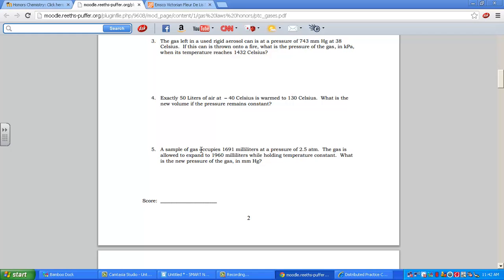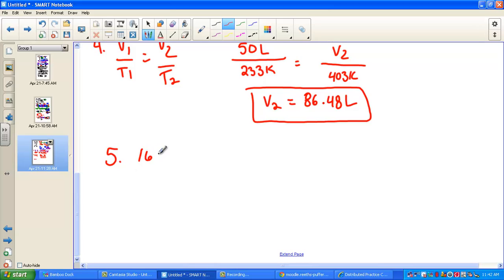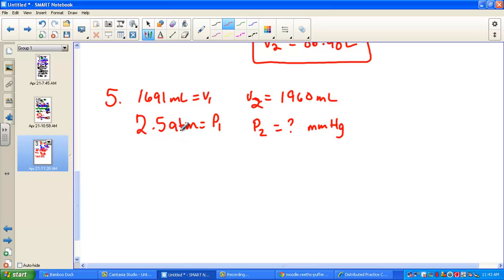Last one in this set, number 5. Gas occupies 1691 milliliters, mLs. Pressure 2.5 atmospheres. Gas is allowed to expand to 1960 milliliters while holding temperature constant. What's the new pressure in an MMHG? So I have a little pressure converting again. Let's record what we know. First volume, 1691 mLs. We had 2.5 atmospheres, P1. We allow the gas to expand. So V2 is 1960 mLs. Same unit, so that's good. And P2 is what we're looking for. But it has to be in an MMHG. This time, what I'll do is convert at the end. It doesn't matter.